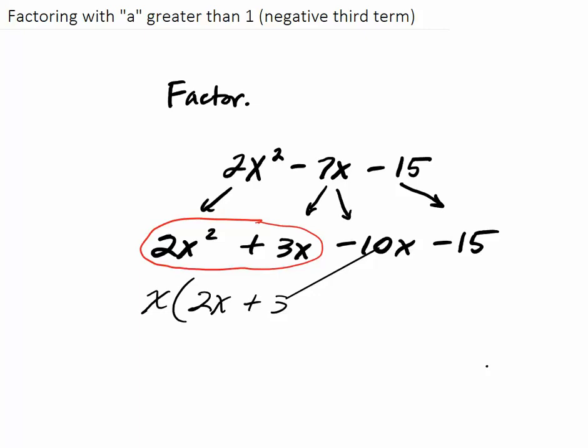That would be an x, then I'm left with a 2x, and then a plus 3. Now let me double check that that works. Does x times 2x give me 2x squared? Yes. Does x times 3 give me 3x? I'm good to go.